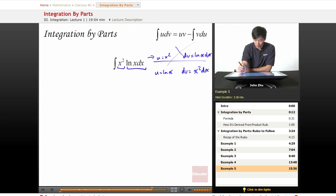If we choose dv equals x squared dx, then we know that v equals one third x cubed just by power rule. And we know that du equals one over x dx.